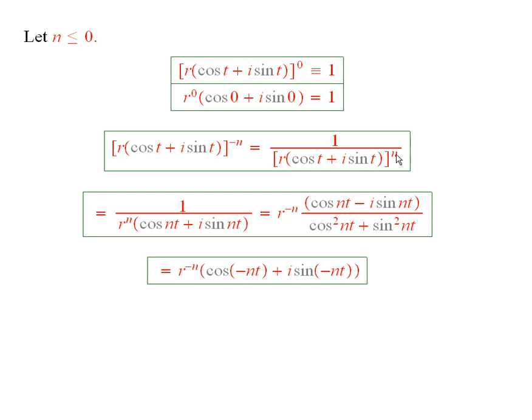Now, using the formula, this is equal to this. We can bring the n on the inside and put it on the r, and have cosine of nt plus i sine of nt. And that gives you r to the minus n.